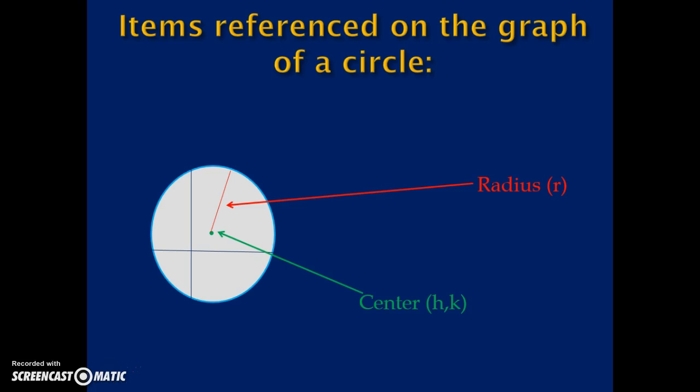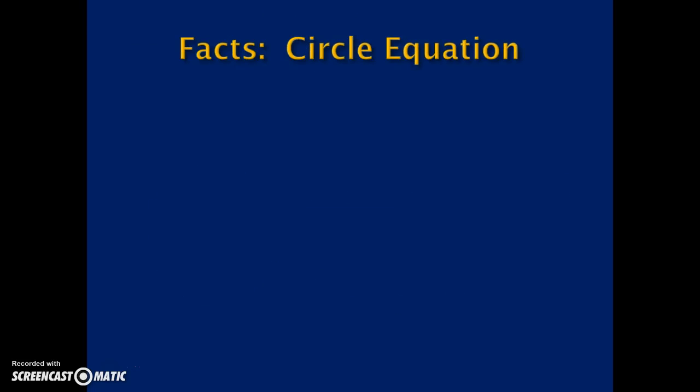And of course every circle has a radius. That is the distance from the center to the surface of the circle that's constant all the way around the circle for 360 degrees or for 2π.